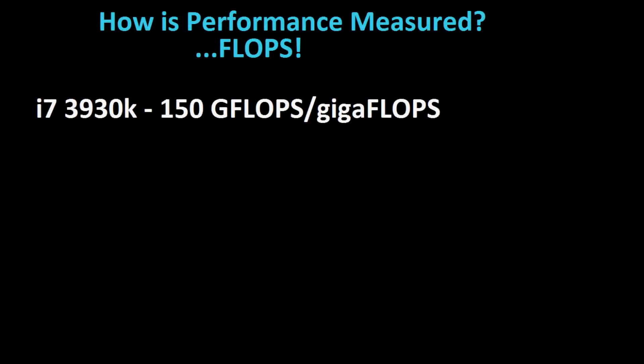How do we measure supercomputer performance? The i7-3930K pushes somewhere around 120 to 150 GFLOPs, or GIGAFLOPs. Nowadays for supercomputers you'll most likely hear PETAFLOPs, and also TeraFLOPs. PETA equals quadrillion, Tera equals trillion, and GIGA equals billion.